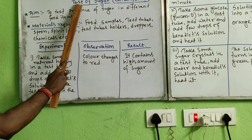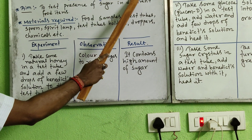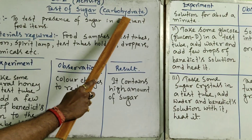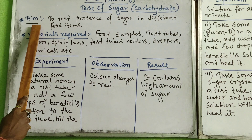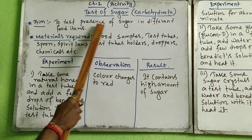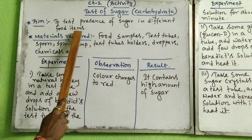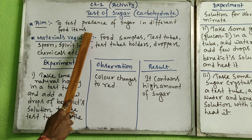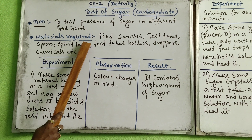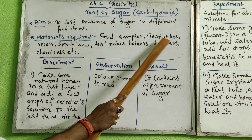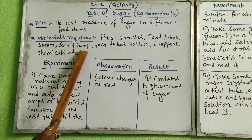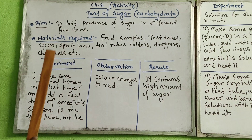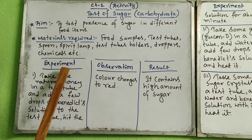The aim is to taste the presence of sugar in different food items — sugar is also a type of carbohydrate. You will write in the aim: 'to taste presence of sugar in different food items.' Materials required: food samples, test tubes, spoon, spirit lamp, test tube holders, droppers, and chemicals.